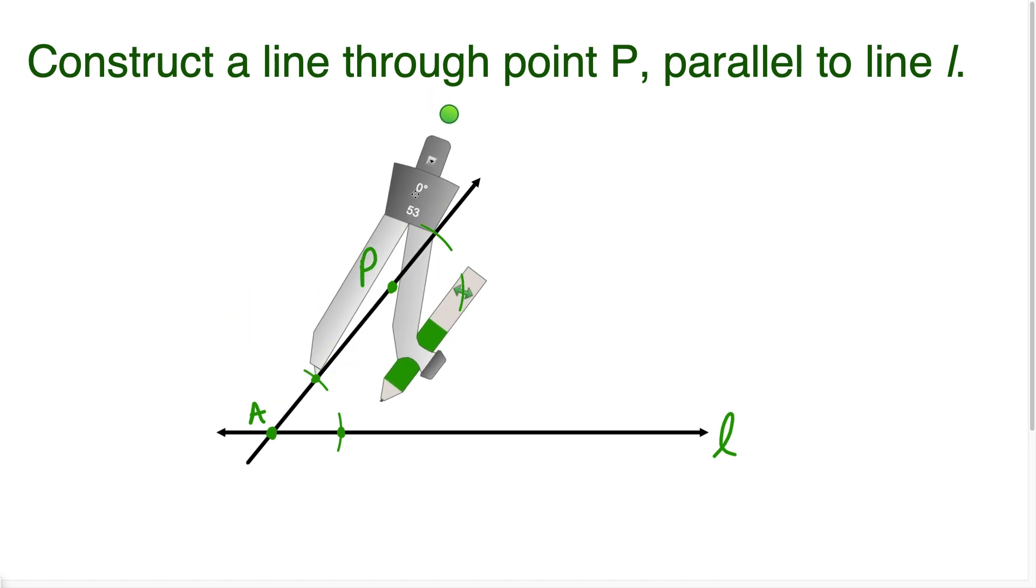I'm going to place the compass at this point, and to measure the distance, I adjust the compass so that it lands directly on this point. To show that I actually measured that distance, I'm going to swing an arc here. That shows that I measured the distance between these two points.